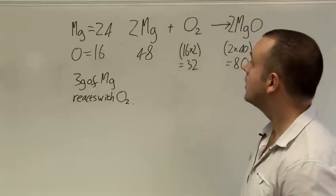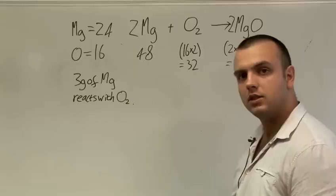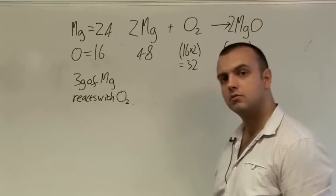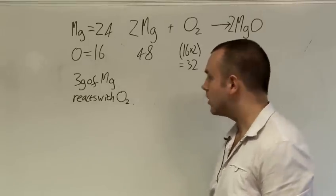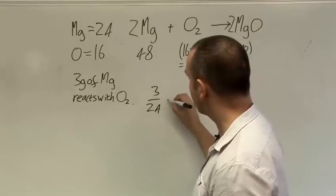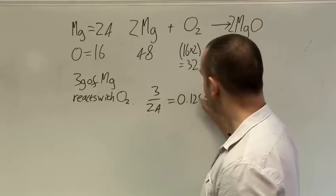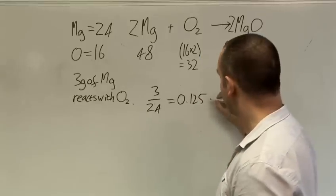We work out in this way. We know that one mole of magnesium has a mass of 24 grams. So if we only have 3 grams what fraction of a mole is that? Well it will be 3 over 24 which is 0.125 or an eighth of a mole.